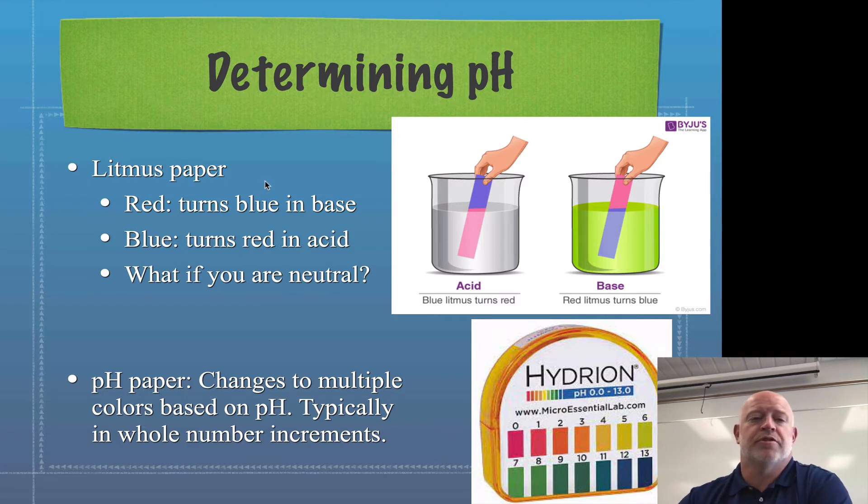So first thing we want to do is talk about litmus paper. Litmus paper does not tell you the actual pH. All litmus paper can do is tell you if it falls on the acidic side or on the basic side of our range.